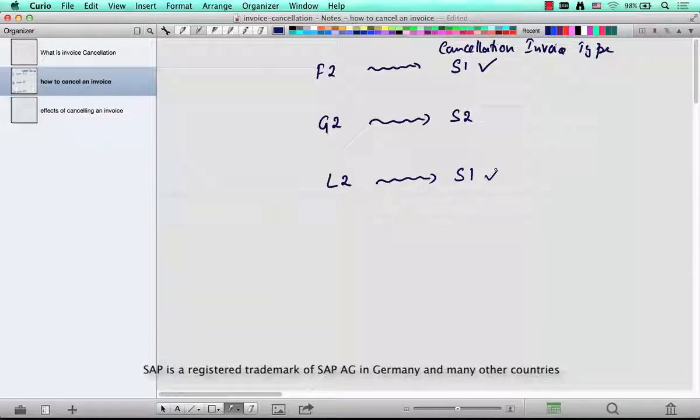In case the company needs to give out money to the customer, we use S2 as the cancellation invoice.